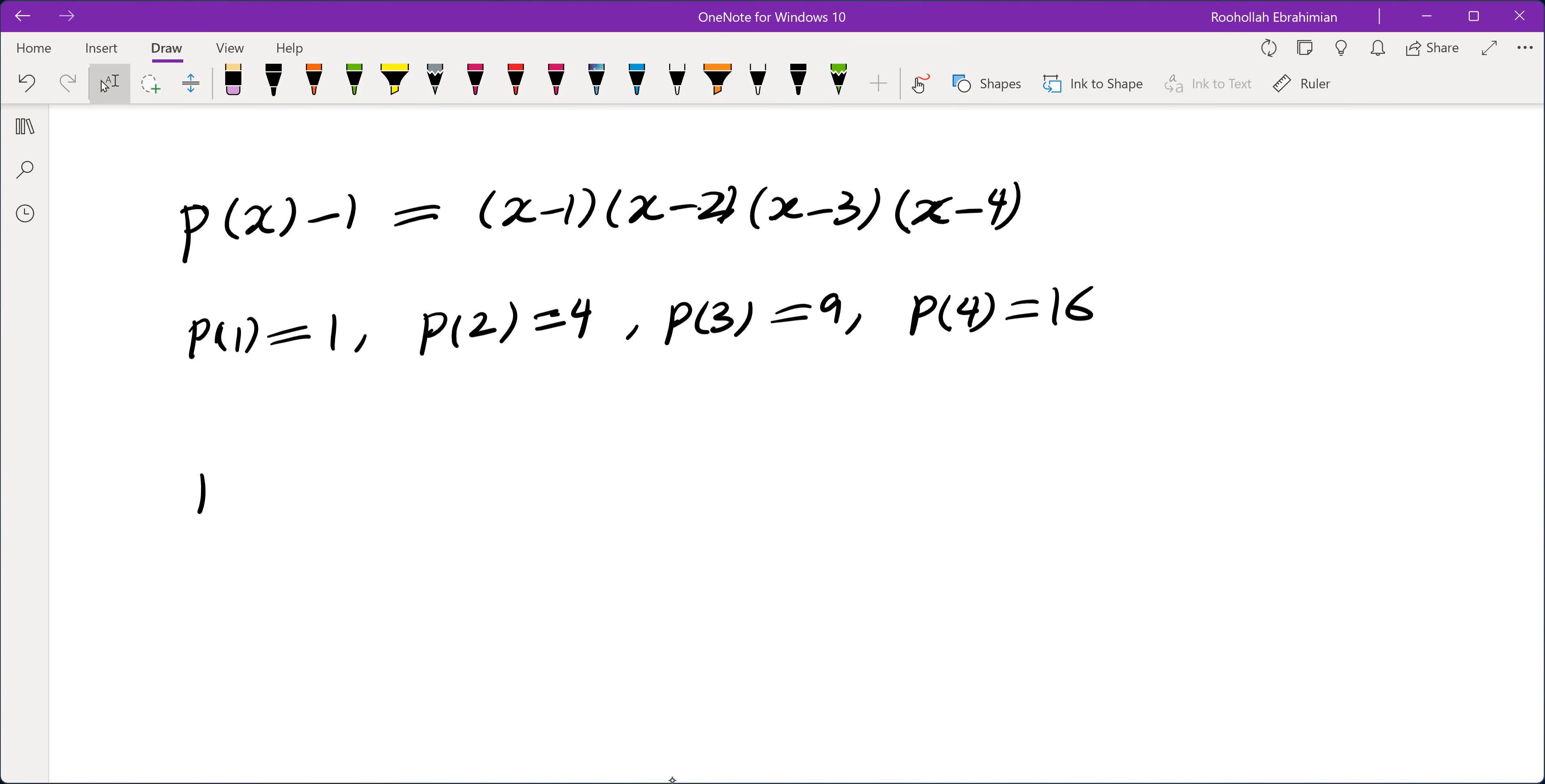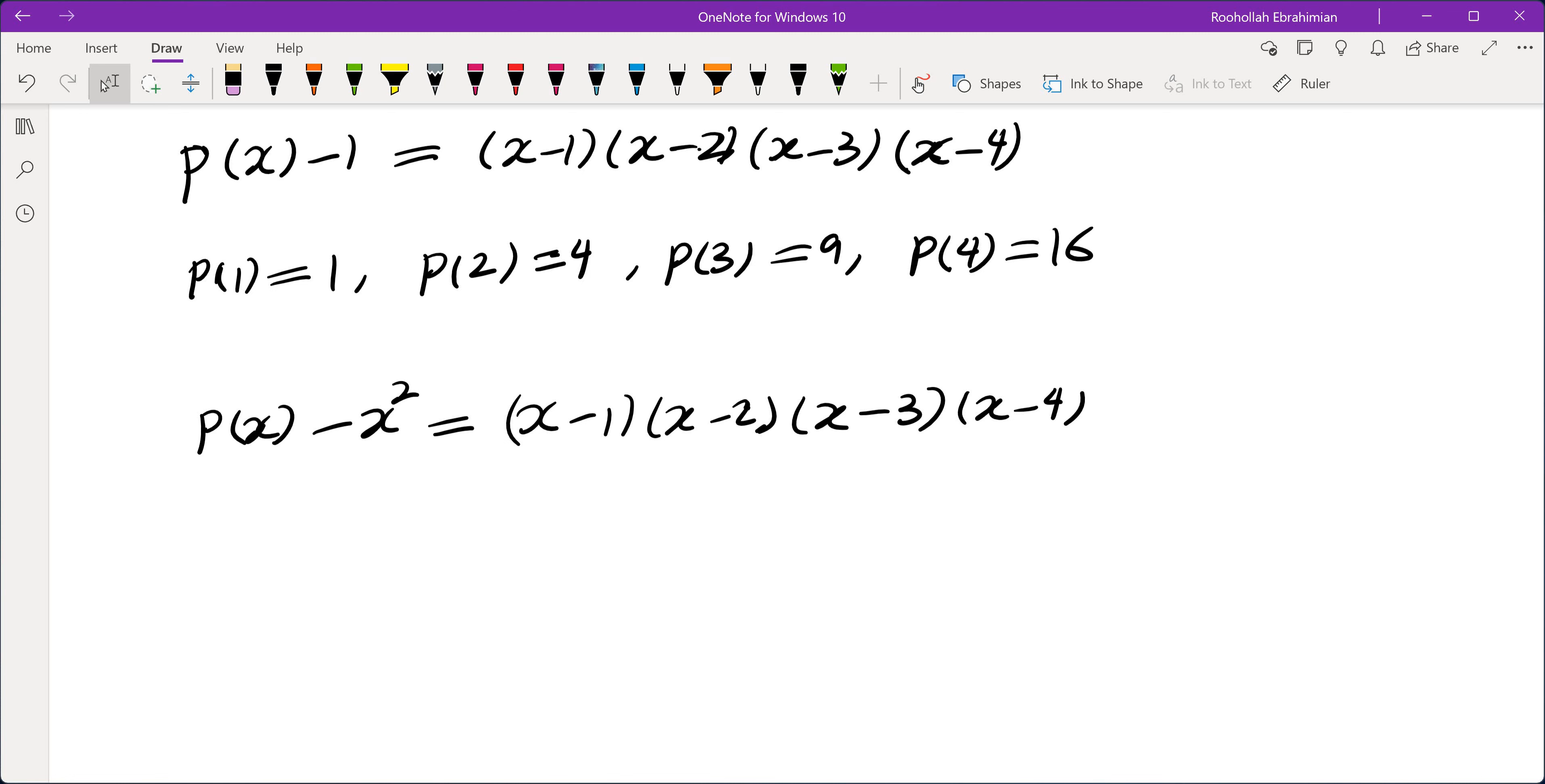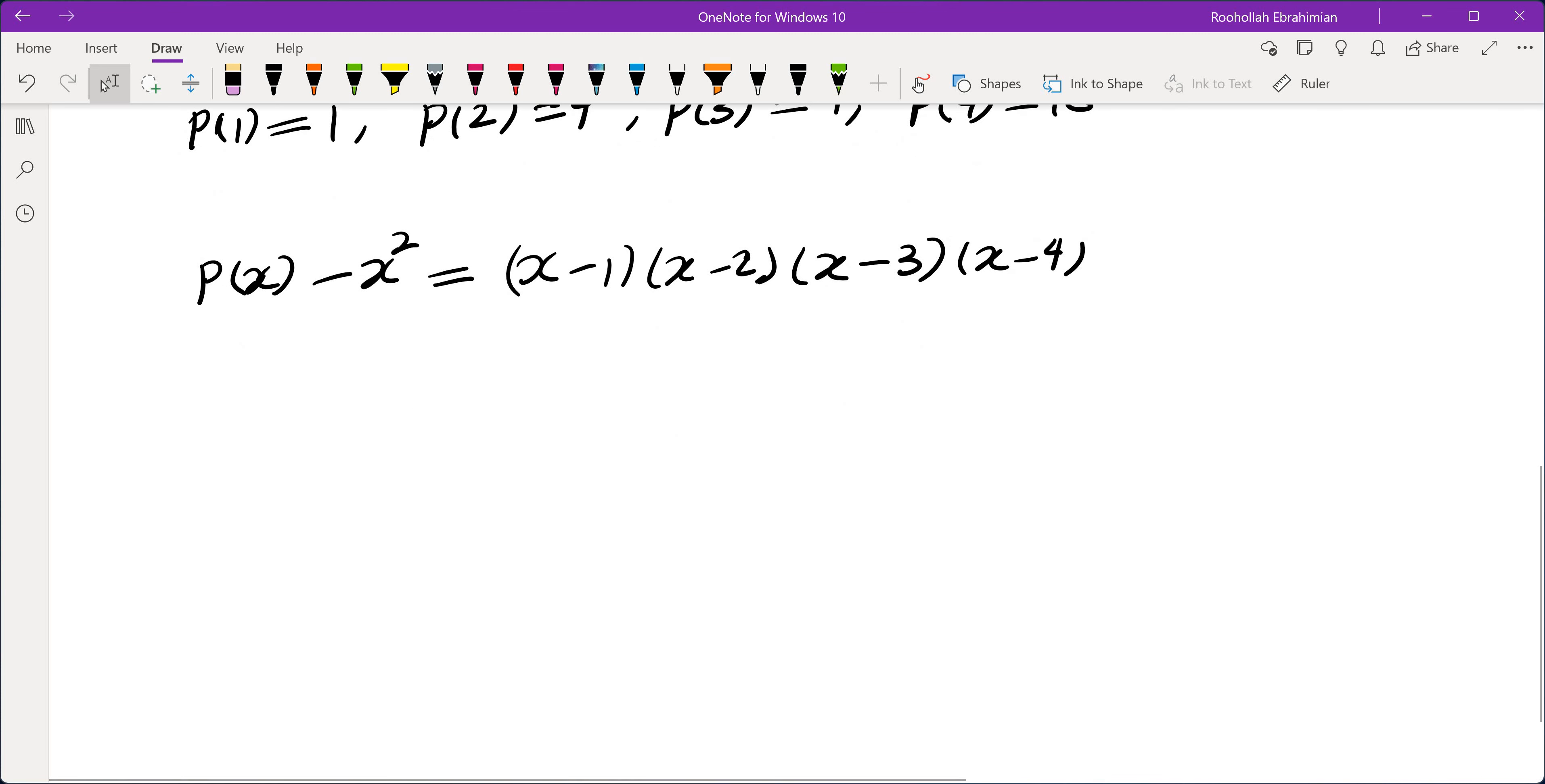So what we can do is, under the same assumptions, we can do p of x minus x squared. This is a polynomial of degree 4. It is still monic, and I have four roots of this one: x minus 1, x minus 2, x minus 3, and x minus 4. So this is interesting. We can actually find the polynomial using this given information. Now let's go back and look at the problem that they gave us and see if we can solve the problem.